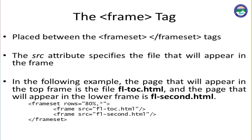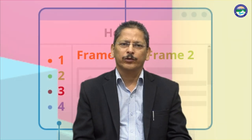In the following example, the page that will appear in the top frame is the file f1.html, and the page that will appear in the lower frame is f2.html. Here the frameset rows are set to 80% comma star, meaning the first row has size 80% and the second will be 20%. Inside this, frame source equals f1.html and f2.html, so these two HTML files are displayed in the first and second rows respectively.